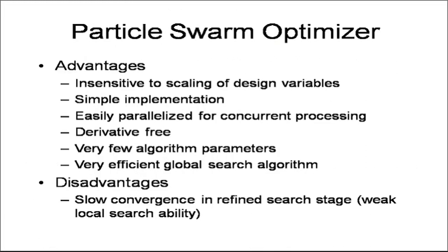Now, what are the advantages of the Particle Swarm Optimizer? The advantages of PSO are: insensitive to scaling of design variables, simple implementation, easily parallelized for concurrent processing, derivative free, very few algorithm parameters, and a very efficient global search algorithm. Disadvantages of PSO include slow convergence in the refined search stage and weak local search ability.